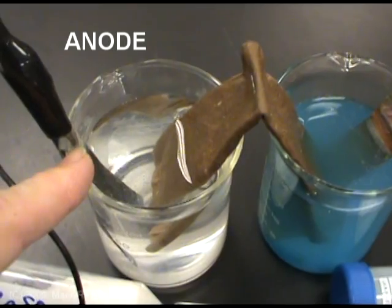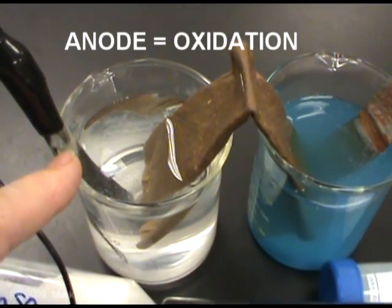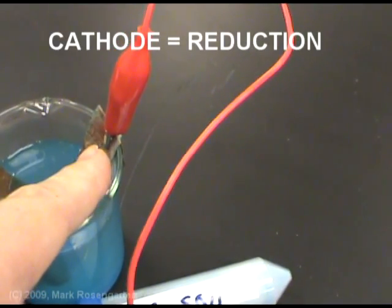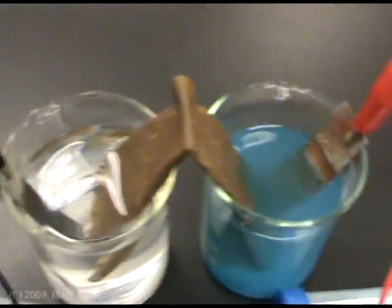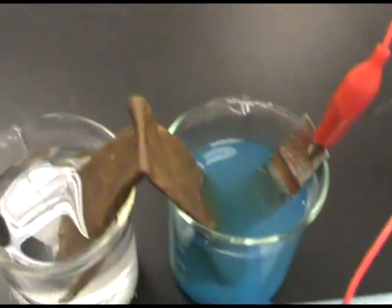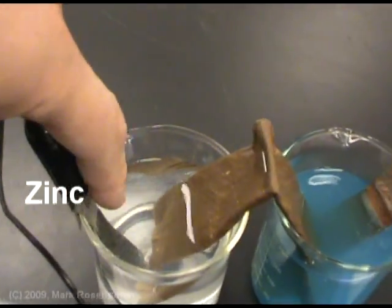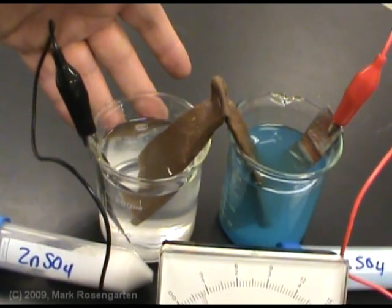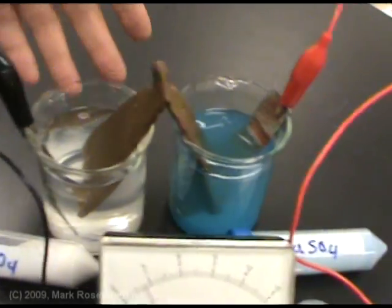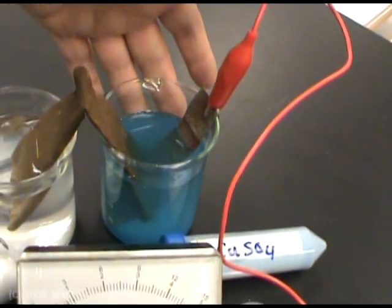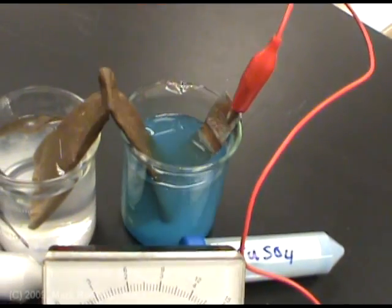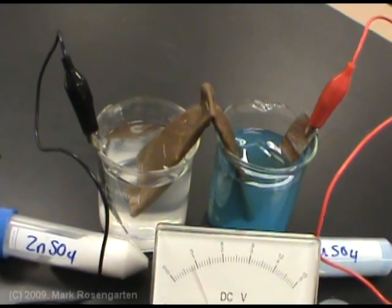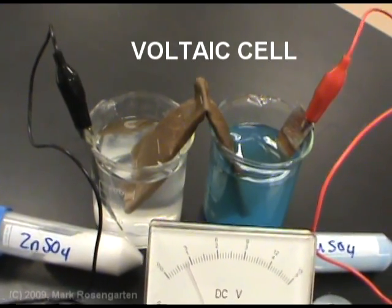This is the anode. The anode is where oxidation takes place. This is the cathode. This is the electrode where reduction takes place. The anode and cathode refer to the metal strips that the wires are connecting onto. This is called the anode half cell, and this is called the cathode half cell. And together, these two half cells form a voltaic cell.